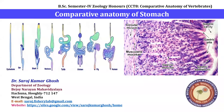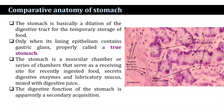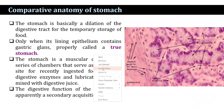I am going to discuss the topic of comparative anatomy of the stomach. The stomach is basically a dilation of the digestive tract for the temporary storage of food. Only when its lining epithelium contains the gastric glands is it known as a true stomach.